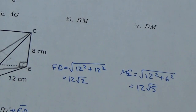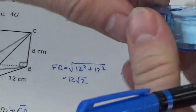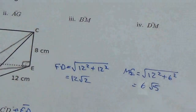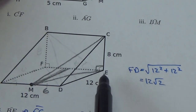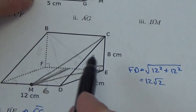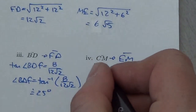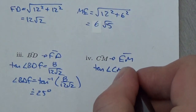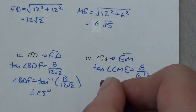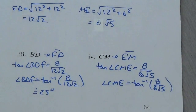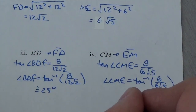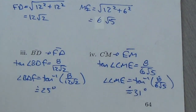ME equals the square root of 12 squared plus 6 squared = the square root of 144 + 36 = 6 root 5. The height CE is 8. So the tangent of angle CME equals 8 divided by 6 root 5, and angle CME equals the inverse tangent of 8 over 6 root 5. Evaluating that on the calculator gives approximately 31 degrees.